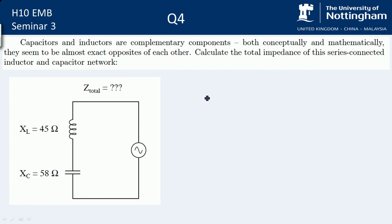Next up, I'm going to go through question four on the seminar sheet. So this is looking at the total impedance of the series connected inductive capacitor network. We need to find the total impedance. We've looked at this in class. Remember, we've got things that are measured in ohms here.